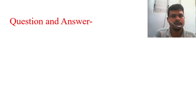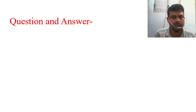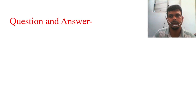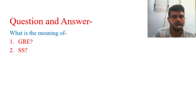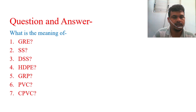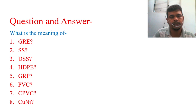Now we have the question and answer section. I will give you some questions. In the previous Lectures 2 and 3 I also gave some questions. I hope to prepare an answer section after Lectures 1, 2, 3, and 4. The questions are: What is the meaning of GRE? What is the meaning of DSS? Then HDPE, GRP, PVC, CPVC, and CUNI? You need to answer the full meaning of all these short forms.